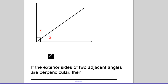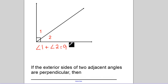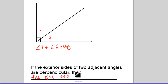Another theorem: if the exterior sides of two adjacent angles are perpendicular, that means I have two adjacent angles, one and two, sharing a common side with no common interior points. We know that this side is perpendicular to this side. Therefore, angle one and angle two have to add up to 90 degrees. What's our definition of two angles that add up to 90? Complementary. So our theorem is: if the exterior sides of two adjacent angles are perpendicular, then the angles are complementary.